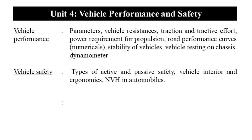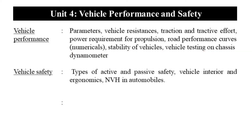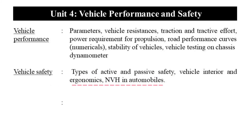The fourth unit is Vehicle Performance and Safety. We learn vehicle performance parameters, vehicle resistances, traction and tractive effort, power requirement for propulsion, and road performance curves — including numerical problems. We also study stability of vehicles, vehicle testing on a chassis dynamometer, and under vehicle safety: different types of active and passive safety, vehicle interior and ergonomics, and NVH in automobiles.